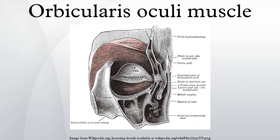The lacrimal part is a small, thin muscle, about 6 mm in breadth and 12 mm in length, situated behind the medial palpebral ligament and lacrimal sac. It arises from the posterior crest and adjacent part of the orbital surface of the lacrimal bone, and passing behind the lacrimal sac, divides into two slips, upper and lower, which are inserted into the superior and inferior tarsi medial to the puncta lacrimalia.